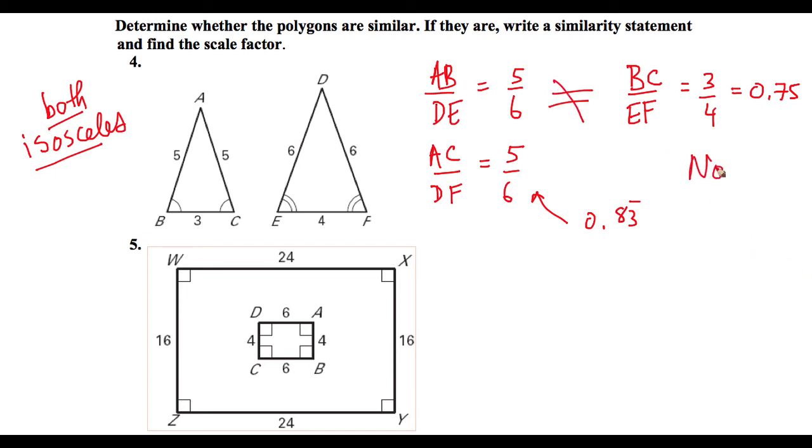Therefore, the two triangles are not similar. Based on the information that we are given, they are definitely not similar. Because the proportions do not match perfectly, even though they are both isosceles.